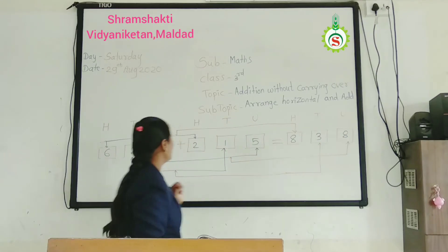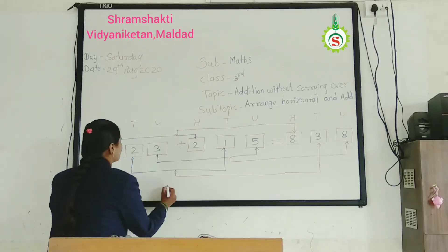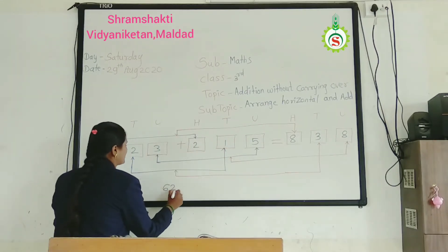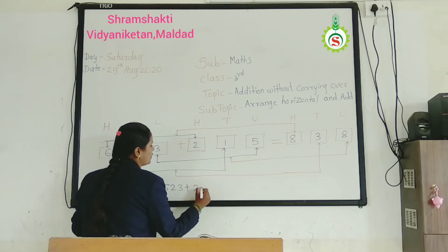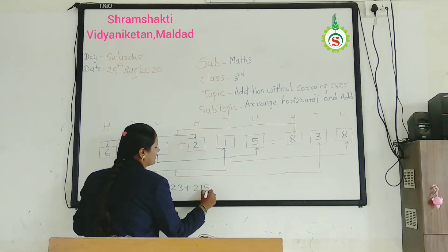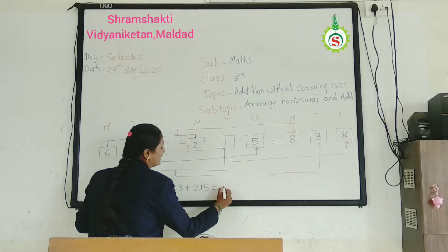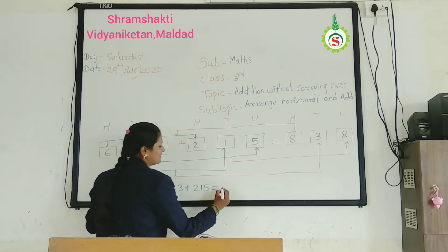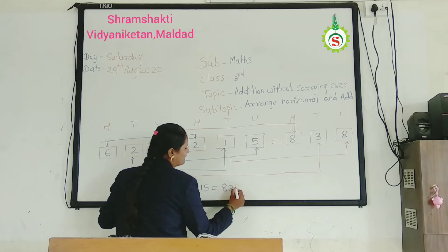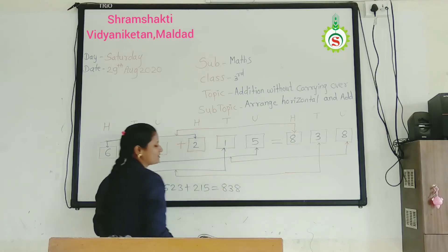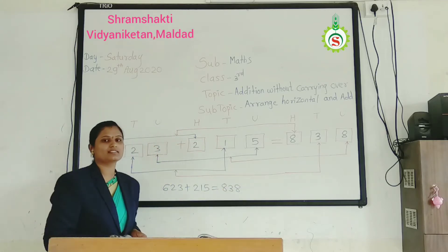Right? Means 623 plus 215. We get answer 838. See, then, next sum.